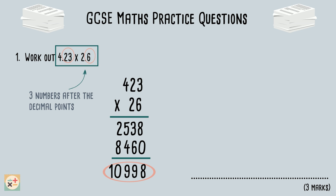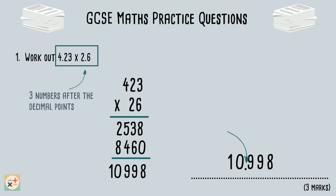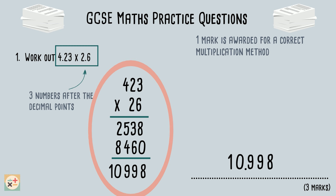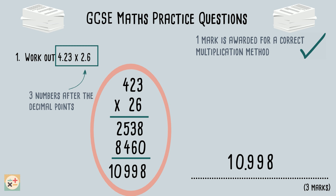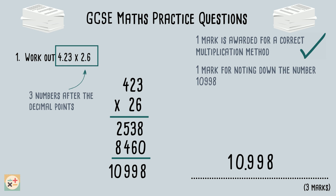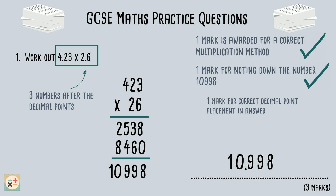Therefore, there should be three numbers after the decimal point in our answer, so we can place our decimal point here. This question is worth three marks in total: one mark for a correct multiplication method — note this can be different to the one demonstrated — one mark for writing down the number 10,998, and finally one mark for the correct placement of the decimal point.